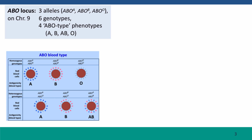First, though, to think about an example where alleles of different loci act independently. For this, we're going to go back to thinking about the ABO locus that affects which sugar modifications are placed on the surface of red blood cells. You remember from Module 3 that there are three alleles — A, B, and O — and that A and B cause different sugars to be produced on the surfaces of red blood cells. O puts no sugar on.